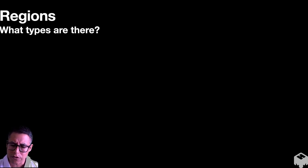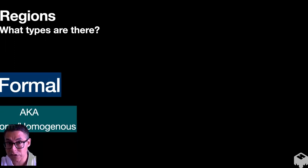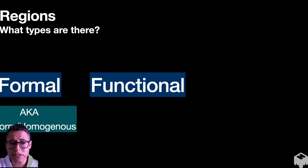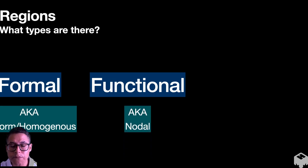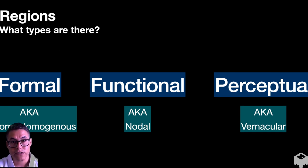So what types of regions are there? Well, there's three types. Formal, also known as uniform or homogenous. Functional regions, also known as nodal regions. And perceptual regions, also known as vernacular regions. So if you see these names, because maybe you're taking a test, that is the same thing as the ones in the blue label.